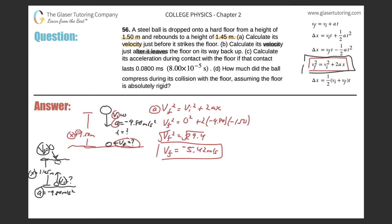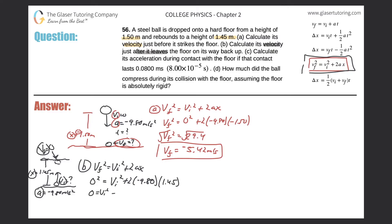For letter B: final velocity squared equals initial velocity squared plus two times the acceleration times displacement. So zero squared equals V_i squared plus two times negative 9.80 times positive 1.45. Working that out: zero equals V_i squared minus 28.4. The value of two times negative 9.8 times 1.45 comes out to be negative 28.4.